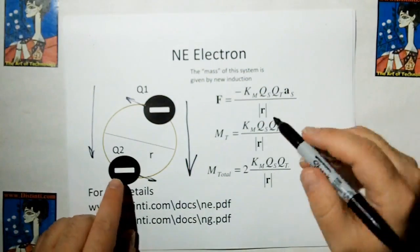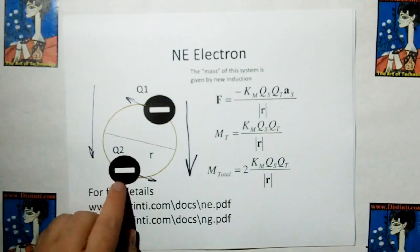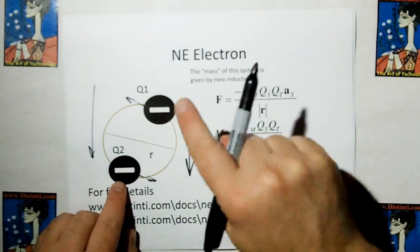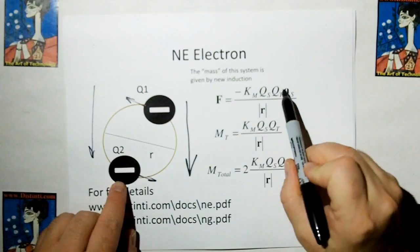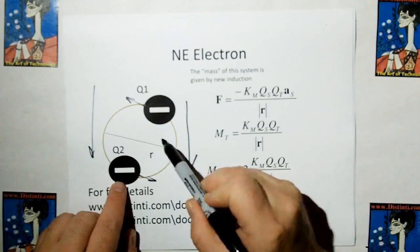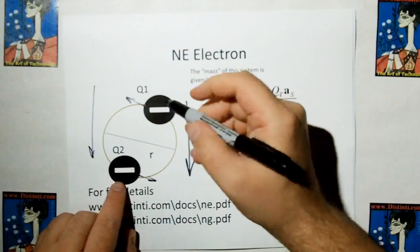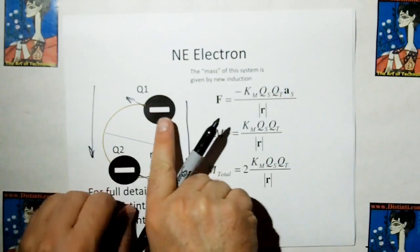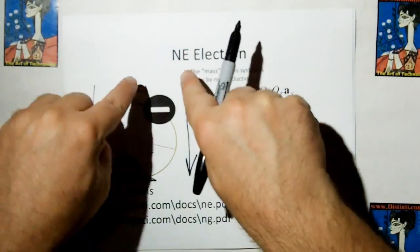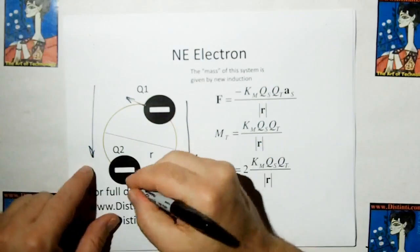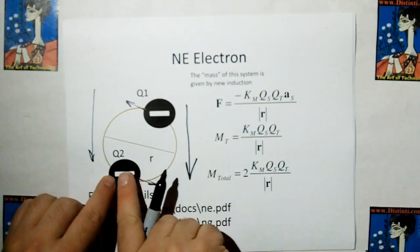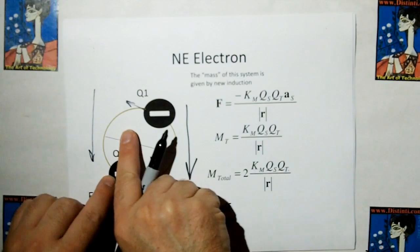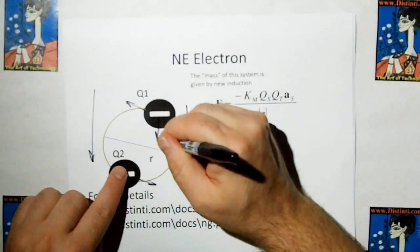And what this says is the force on Q2 from Q1 is the acceleration of Q1 times the two masses, inverse the distance, and K amps. In other words, as this guy is accelerating through the ether that way, because the ether is accelerating, it's going to generate a force this way on this guy. And likewise, because this guy is accelerating through the ether, it's going to generate a force like this on the other guy.